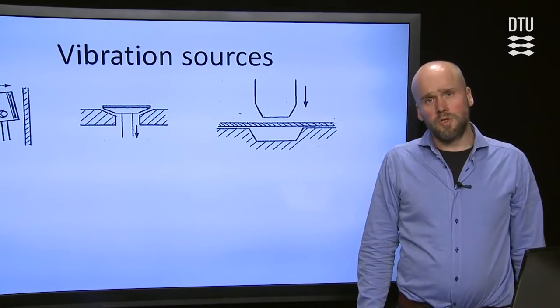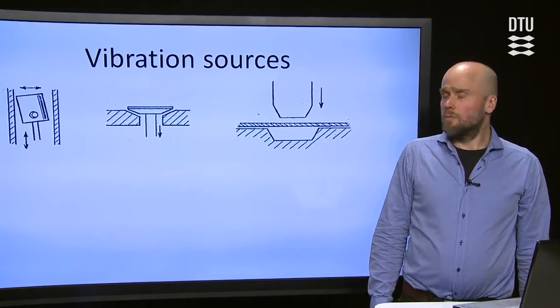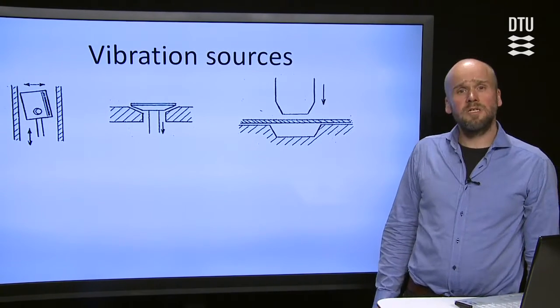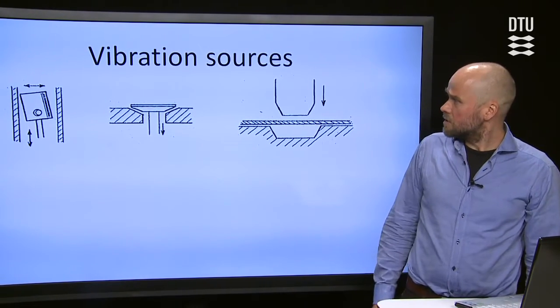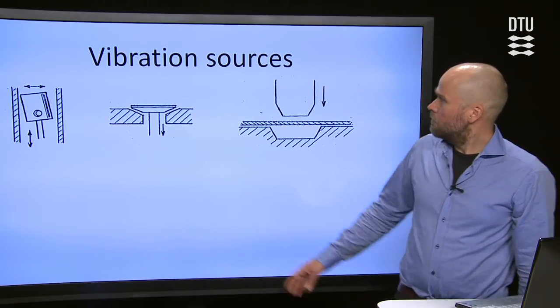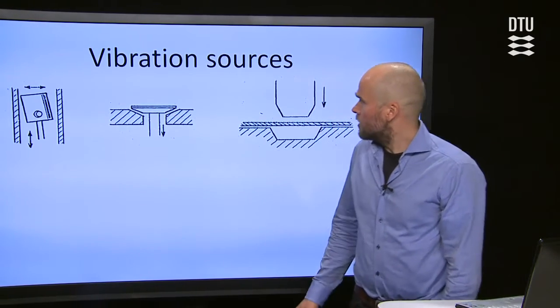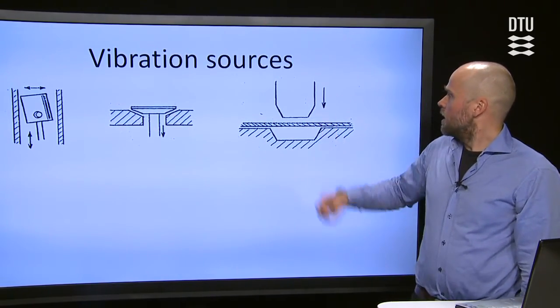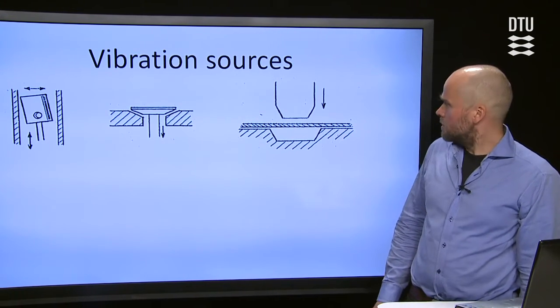The sources can be of different types. One type is transient sources. This could be moving parts of an engine but it can also be like a punch press in a production line.